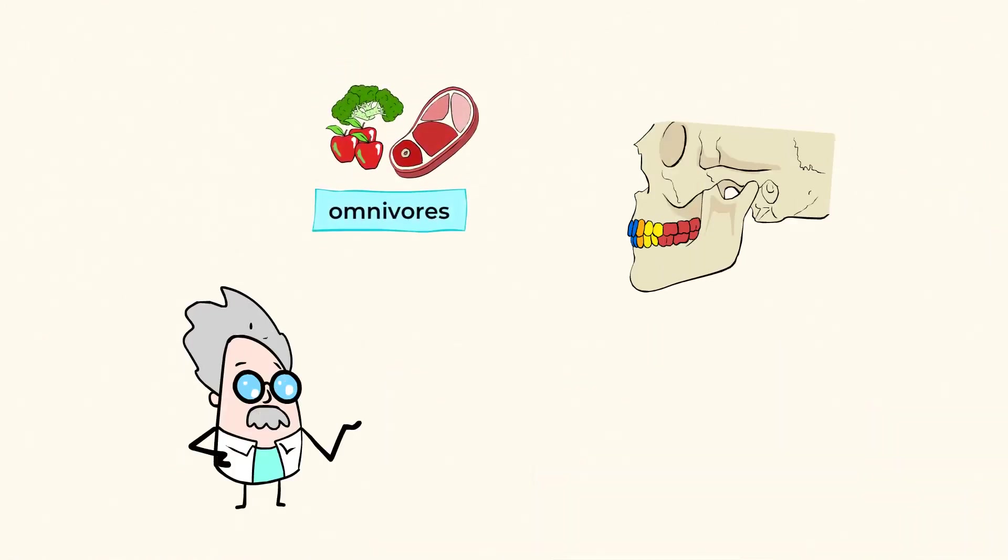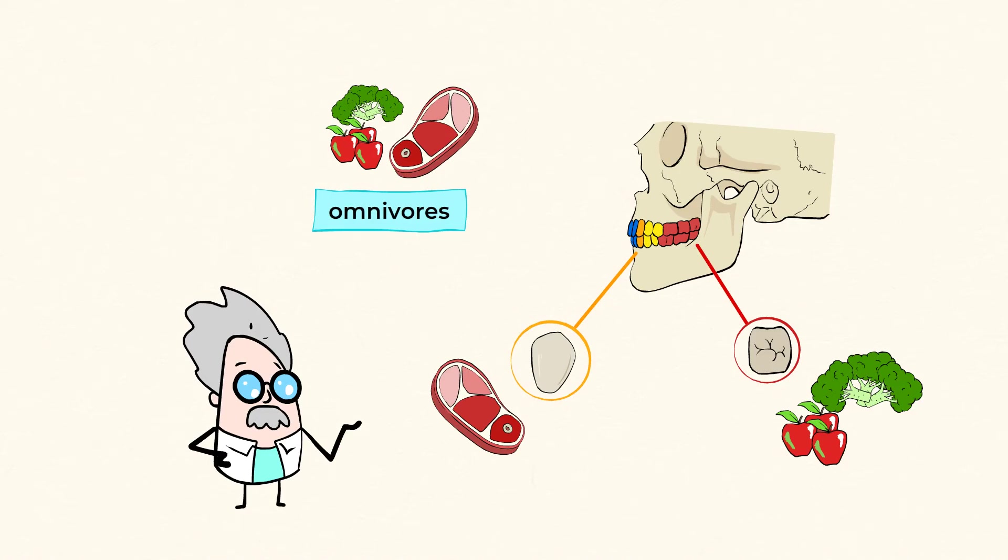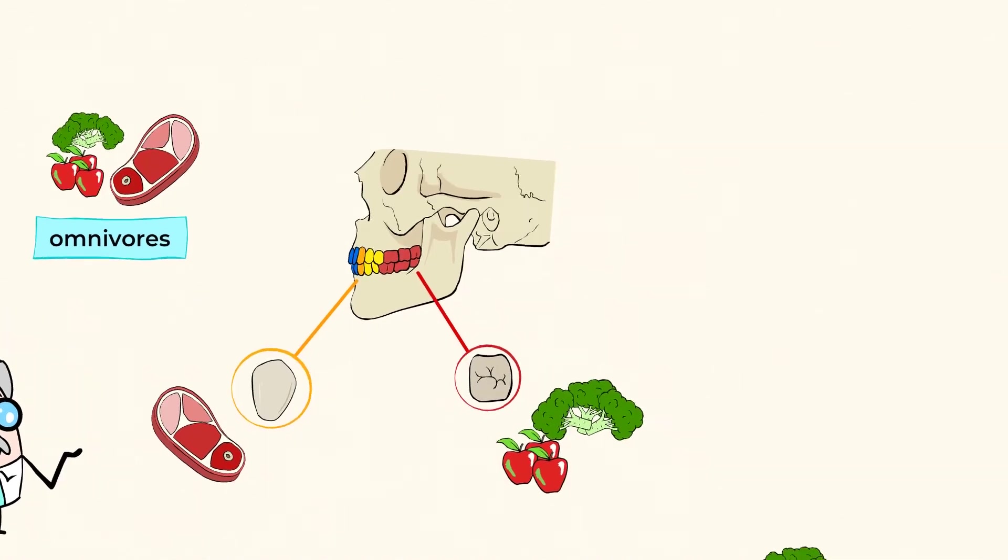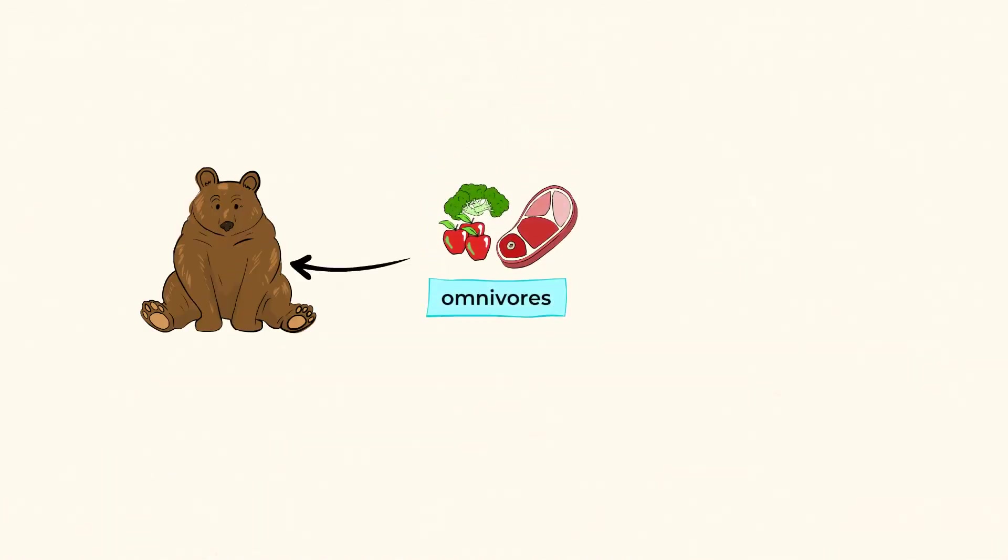Omnivores have some longer sharp teeth as well as flat back teeth. Even humans have some sharper teeth to help tear meat and flat back teeth to grind fruits and veggies. Bears are great examples of omnivores. They eat berries and grains, but they'll also eat fish and birds.